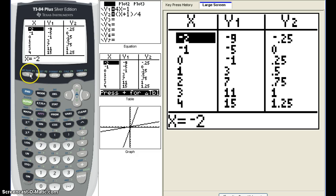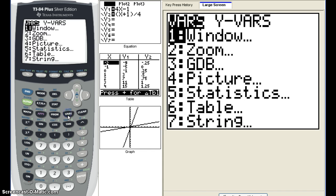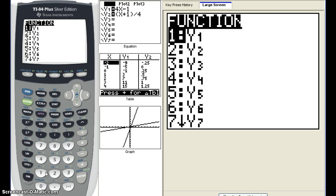Let's go down to your third value on Y equals. We're going to substitute in, we're going to show this by substituting your Y sub 2 into your first function. Hit vars button, which is right here next to clear. Cursor to the right for Y variables, hit 1 for function, and hit 1 for Y sub 1. Now we need parentheses and we're plugging in our Y sub 2, so hit variables, go right for Y variables, hit 1 for function, and hit 2 for Y sub 2.